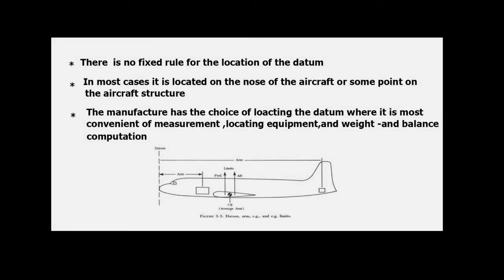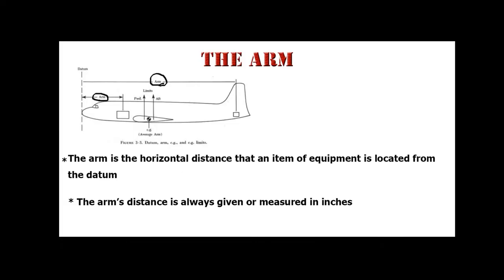In most cases the datum is located on the nose of the aircraft or some point on the aircraft structure. The manufacturer has the choice of locating the datum where it is most convenient for measurement, locating equipment, and weight and balance computation. The arm is the next key term.